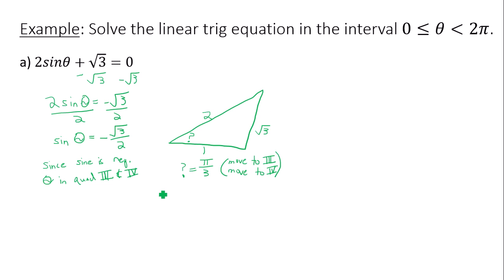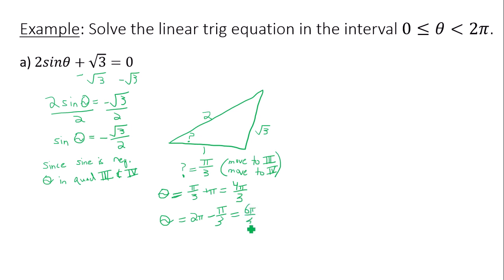Those will be my solutions to this equation. Using the formulas I've previously learned: to move an angle to quadrant 3, take the reference angle and add pi to it — pi over 3 plus pi is 4 pi over 3. To move an angle to quadrant 4, take 2 pi and subtract the reference angle pi over 3, so that is 6 pi over 3 minus pi over 3, which is 5 pi over 3. So I have two solutions: 4 pi over 3 and 5 pi over 3.